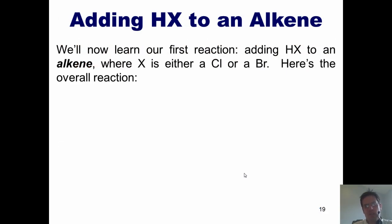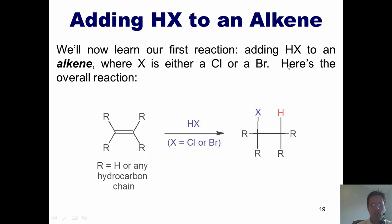I now want to show you your very first organic reaction, adding HX to an alkene. Now when I say HX, I'm talking about a substance in which H is a hydrogen and X is either chlorine or bromine. Here's the overall reaction. If you take an alkene that looks like this, where these R groups represent any hydrogen or just any hydrocarbon chain, and I react them with HX, where X is Cl or Br. So this would be hydrochloric or hydrobromic acid. What ends up happening is the double bond gets converted to a single bond, and I end up placing an X and a hydrogen on those positions.